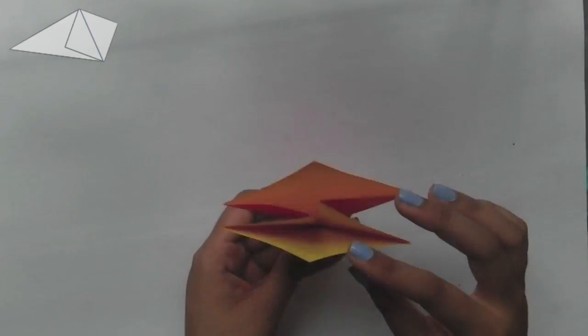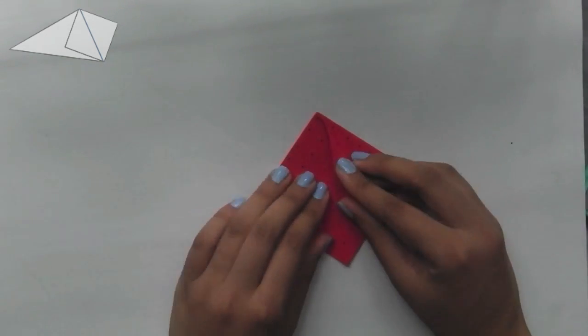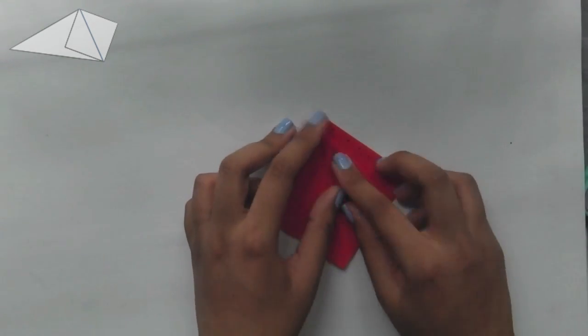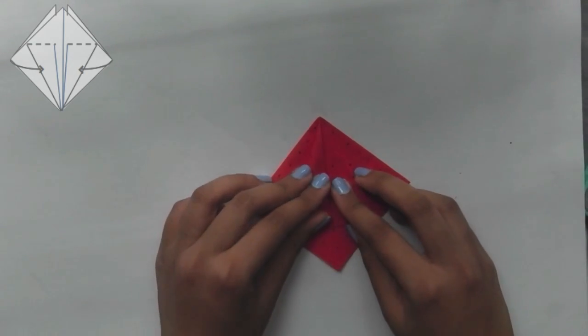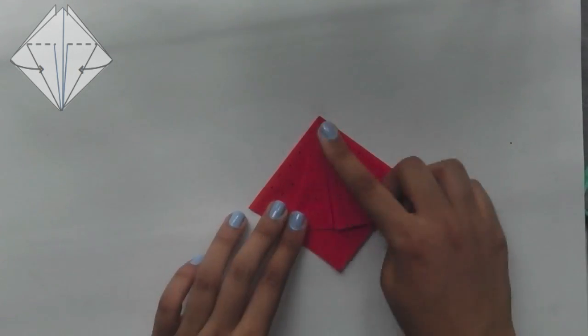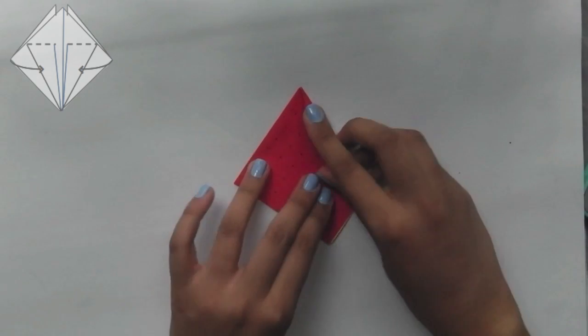Next with the side that has no opening fold the side flaps into the centre. Repeat on the other side.